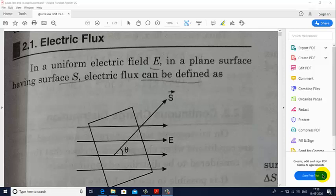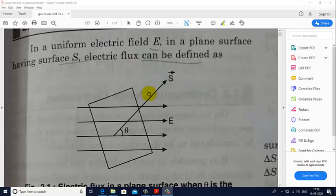The topic that will be discussed in today's lecture is electric flux. Suppose we have a uniform electric field where the direction of this electric field is from left to right. Here we have shown an electric field and a plane surface S is placed in this electric field.